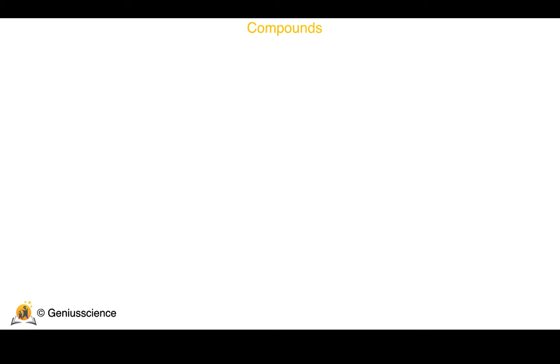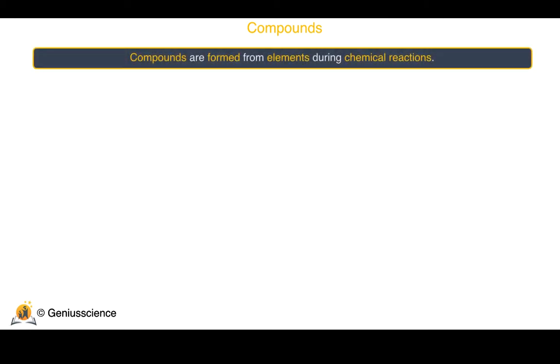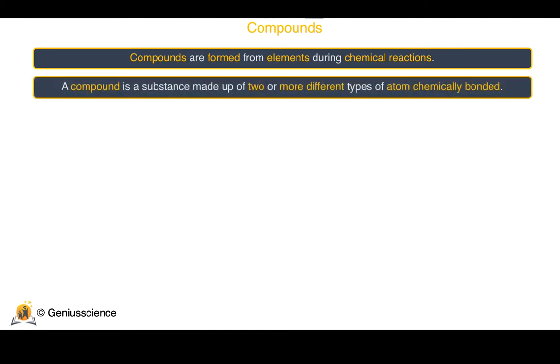We will now take a closer look at compounds. Compounds are formed from elements during chemical reactions. A compound is a substance made up of two or more different types of atom chemically bonded.